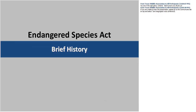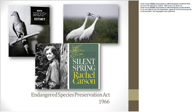Now, a brief history of the Endangered Species Act. The first piece of legislation leading to the ESA we know today was the Endangered Species Preservation Act of 1966, prompted in part by the extinction of the passenger pigeon in 1914, the whooping crane population crash with only 21 estimated individuals documented in 1944, and the publication of Rachel Carson's Silent Spring in 1962 about the impact of pesticides on wildlife and people. This act provided a means for listing native animal species as endangered, but only provided limited protection.